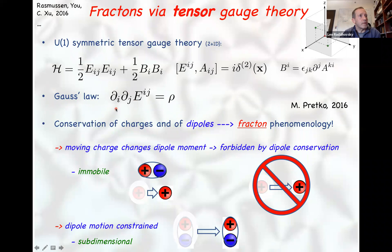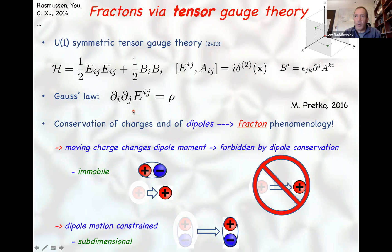Here, because of the double divergence, if you take a region of some size and ask what the dipole density is — which is charge times separation — that quantity can only change by dipole density flowing in from the boundaries. That has to do with this double derivative or double divergence of the quantity.